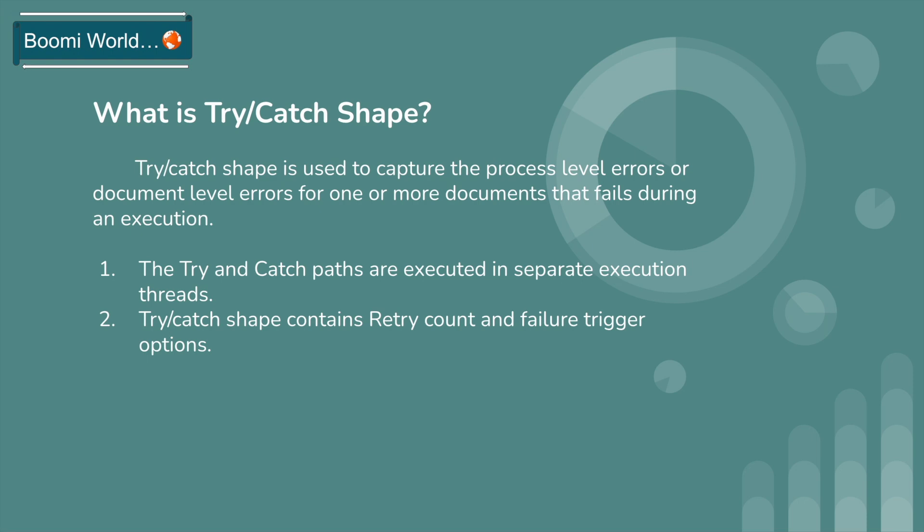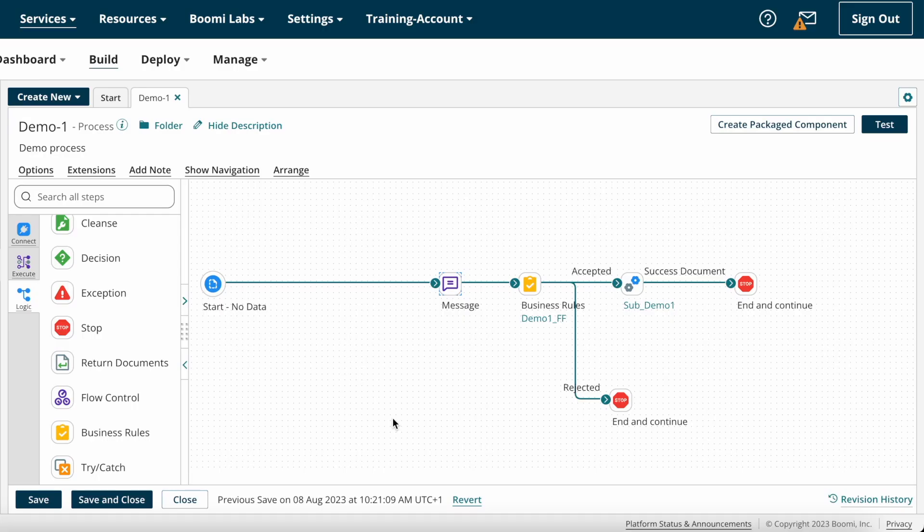The retry count option defines the maximum number of times a failed document will be retried through the main series of shapes after the Try-Catch shape. The failure trigger option is used to specify the type of errors that the Try-Catch shape catches — whether it is document-level errors or process-level errors.